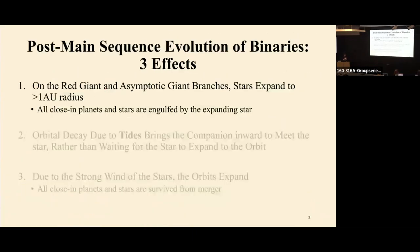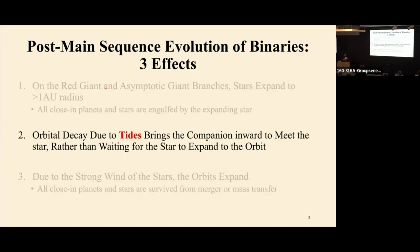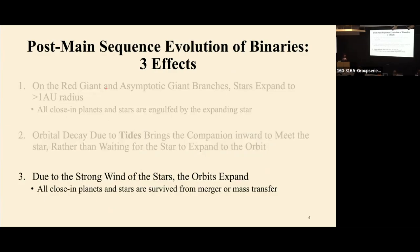I'd like to start with three effects during the post-main sequence evolution in binaries. The first effect is that when the primary star becomes a late-type star — for example, an RGB star or an HB star — the star's radius will expand to more than one AU. So all the close-in planets or secondary star will be engulfed by this expanding star. The second effect is that tidal effects can bring the second object inward to meet the primary star, so the system could undergo merger or mass transfer. The third effect is that due to strong stellar wind, the system will actually expand during binary evolution.